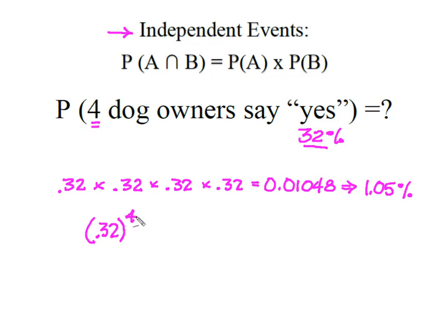So 0.32 to the fourth would have given me that same 1.05%. So if the probability doesn't change because of these independent events, you can literally find this by saying that the probability of e and then raise it to the power of n or the number of trials.